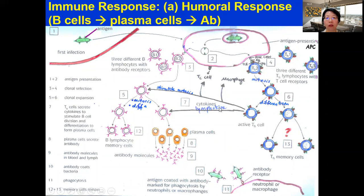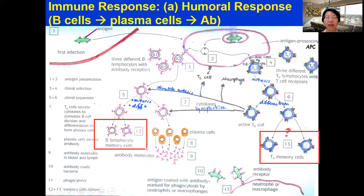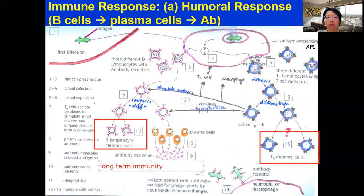Active T helper cells secrete cytokines, activating the selected B cells to undergo clonal expansion, where the cells divide by mitosis and differentiate into plasma cells and B cell memory cells. Plasma cells then secrete antibody. In this entire process, we know that memory cells for T helper cells as well as memory cells for T killer cells will be produced. Today we're focusing on the function of memory cells. Memory cells function to provide long-term immunity - this is a key exam term worth one mark.